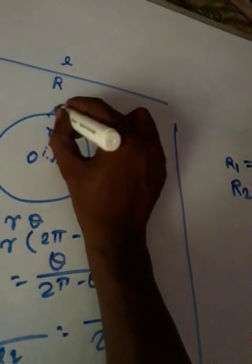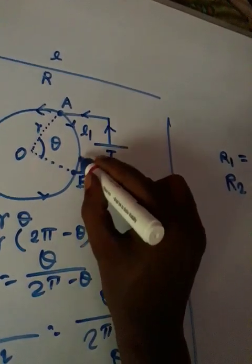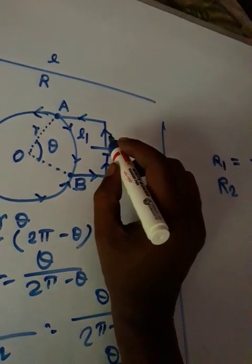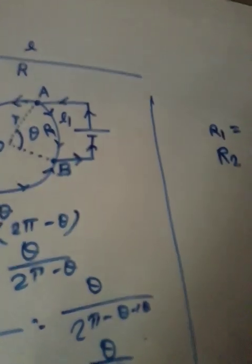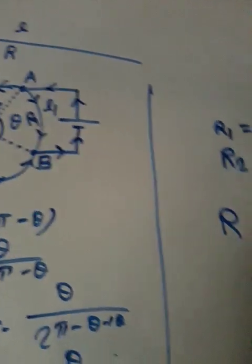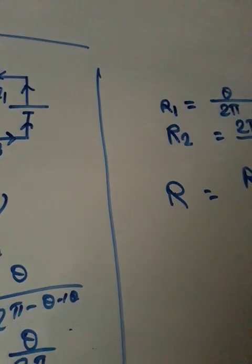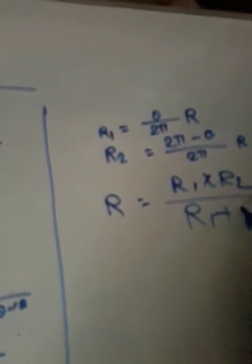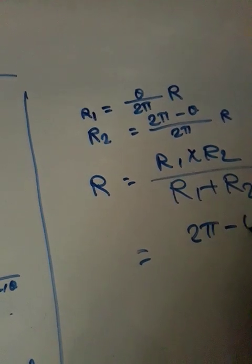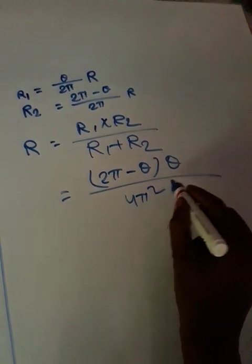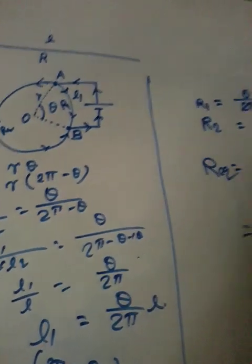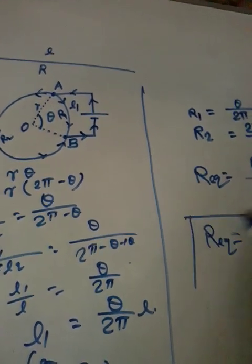The current again combines here, passing through these two sides. So l1 and l2, that is r1 and r2, are in parallel. So equivalent resistance R_eq equals r1 multiplied by r2 divided by r1 plus r2, which equals (2π minus theta) into theta by 4π squared into R. This R_equivalent is the final answer.